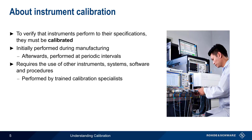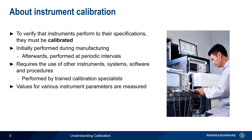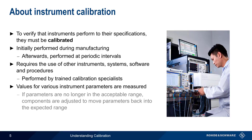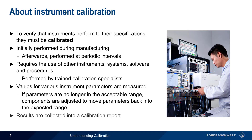During calibration, values for various instrument parameters are measured, and if these parameters fall outside of the acceptable range, they're adjusted back into this range. Upon completion of the calibration process, the results and other relevant data are normally collected into a calibration report.